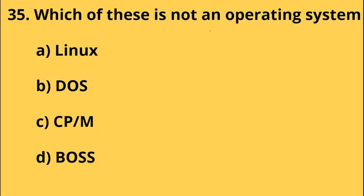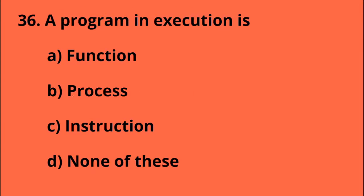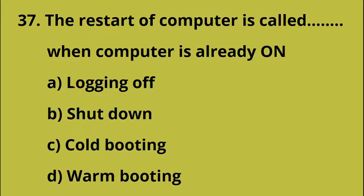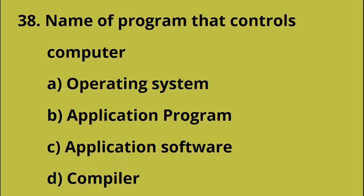Which of these is not an operating system? Option C is not an operating system. A program in execution is a process. The restart of a computer is called booting. When the computer is already on and we restart it, that is called warm booting. Option D.